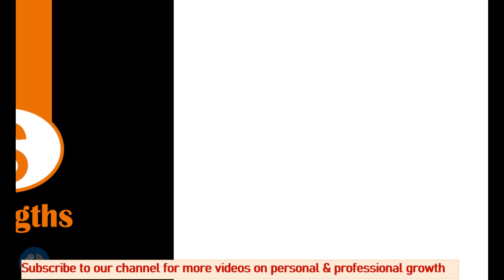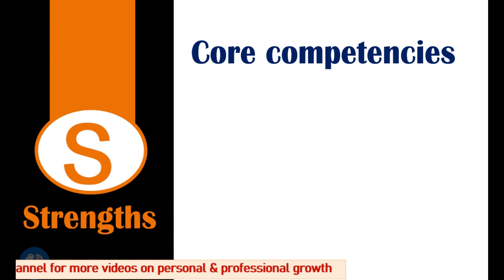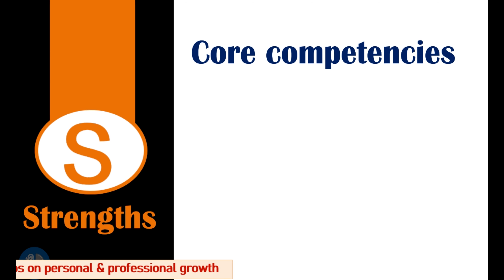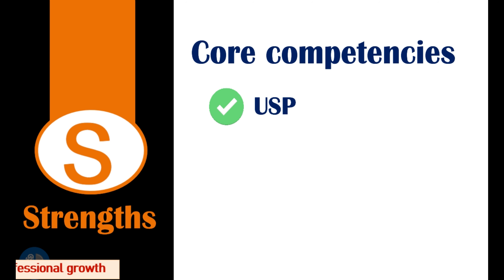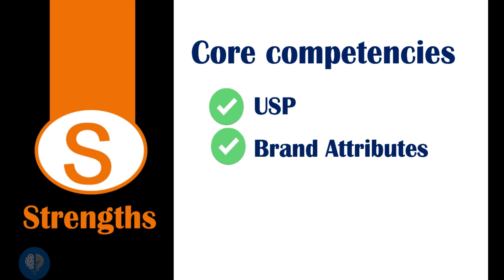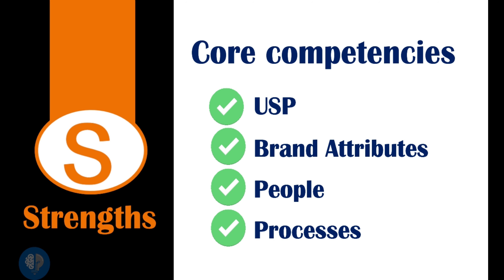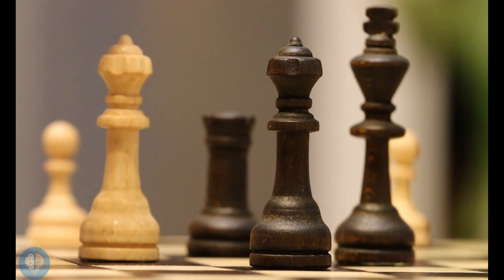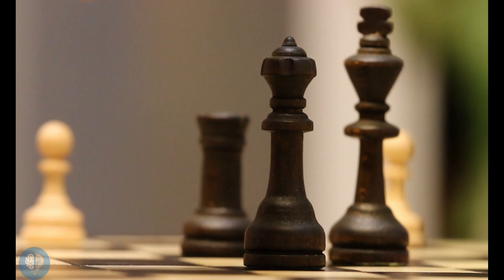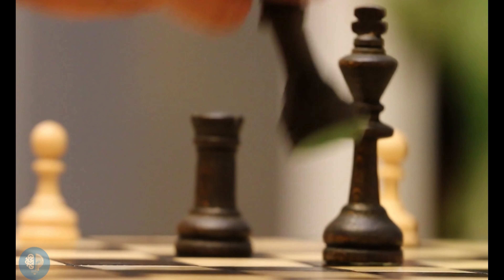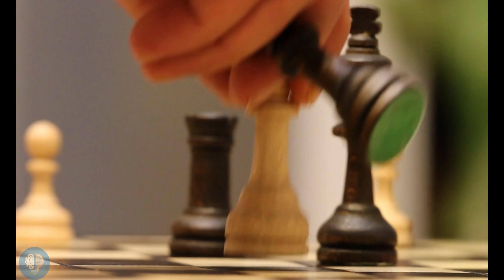The first element is Strengths. These are the core competencies of an organization and can include the USP, brand attributes, people, and processes. Focus on characteristics which give the organization a distinct competitive advantage.